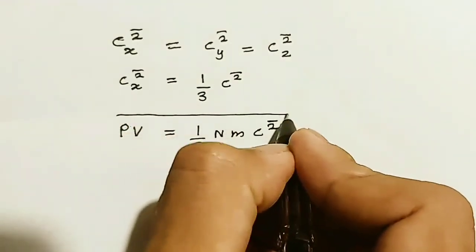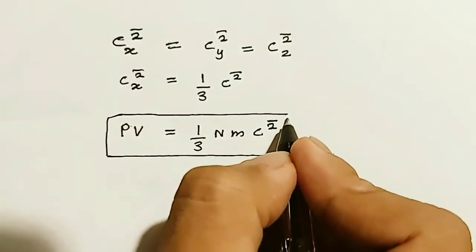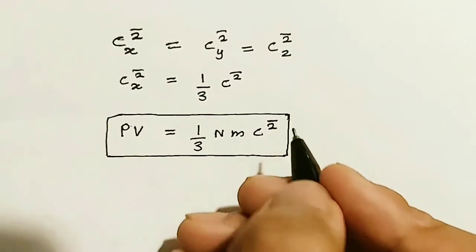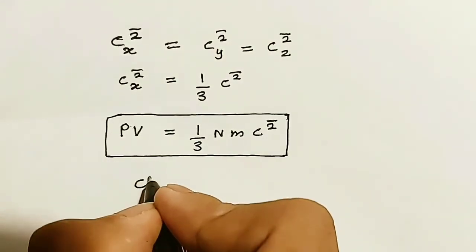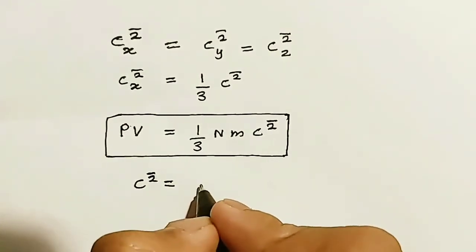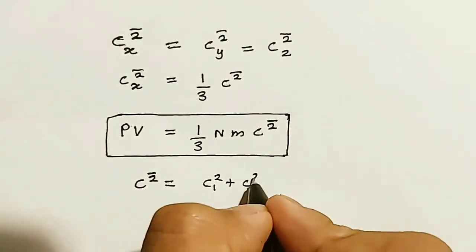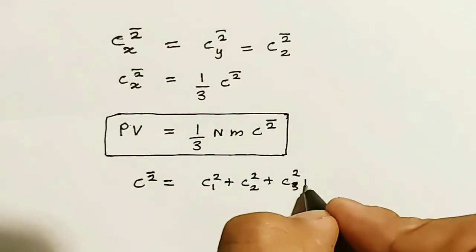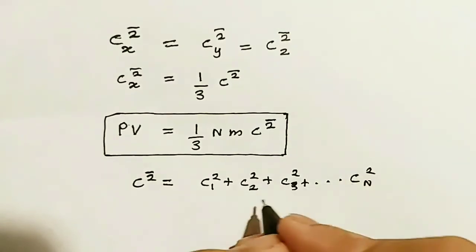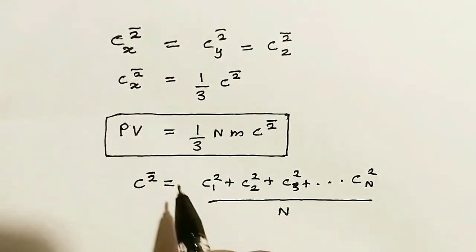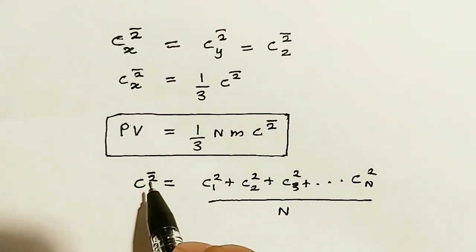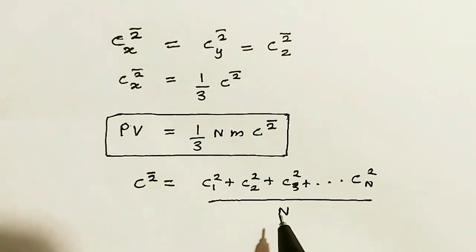Now, this is the equation with regard to the kinetic molecular theory. This particular c squared bar is the mean square speed, where c squared bar is equal to c1 squared plus c2 squared plus c3 squared, up to cN squared, divided by the number of particles N. We have derived the equation and this particular mean square speed with regards to N number of particles. This comes to an end of this video, thank you.